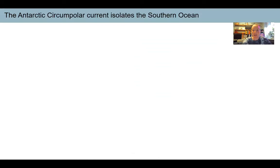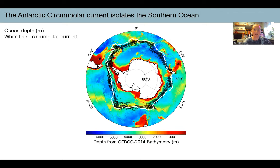This makes the Southern Ocean really important for understanding climate change dynamics and changes on Earth and in the ocean. But it's actually quite isolated, because of the Antarctic circumpolar current, which I'm showing here with this white line. You can see this is the Drake Passage here between Chile and the Antarctic Peninsula. These colors show the depth of the ocean, and you can see there's quite a wide shallow shelf that runs all around the continent of Antarctica, where the fish live.